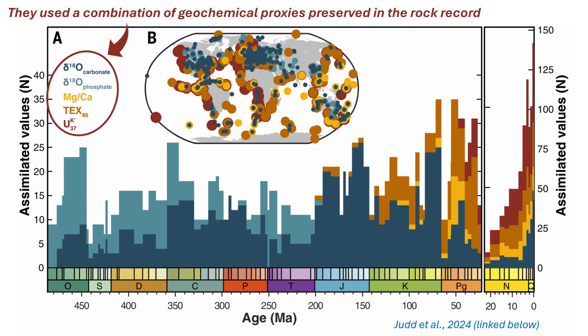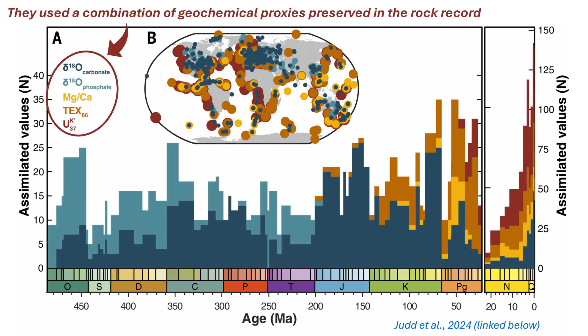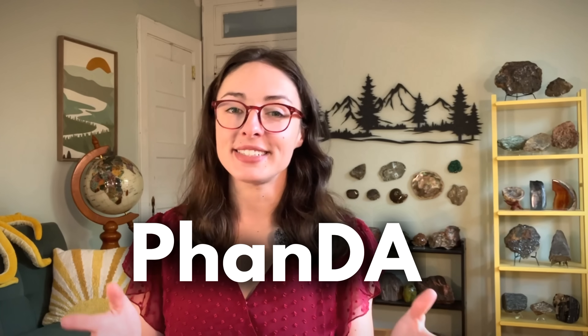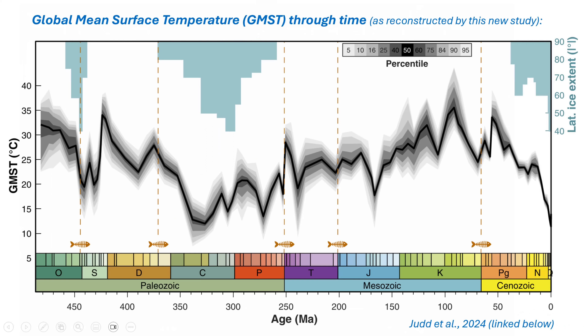In addition to oxygen isotope data and models, they used several other geochemical proxies to corroborate their temperature reconstructions. Because each of these proxies records temperature in a slightly different way, the authors were able to get very well-rounded reconstructions of Earth's past temperatures. They built something they call FANDA — the Phanerozoic Data Assimilation Temperature Record — using a technique called the Kalman filter to constantly update their model with the best available geochemical data. They integrated 85 time slices from 485 million years ago to today, covering periods like the Late Ordovician Glaciation, the Carboniferous Ice Age, the Cretaceous Hothouse, and the Paleocene-Eocene Thermal Maximum.